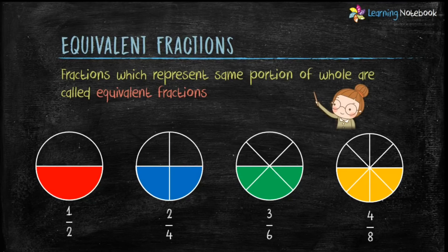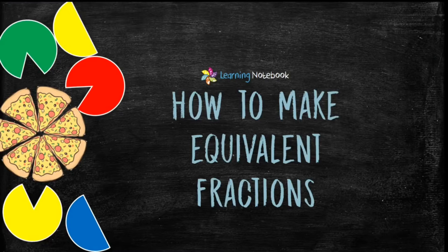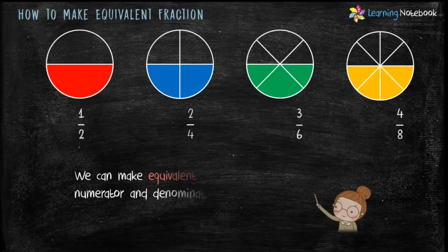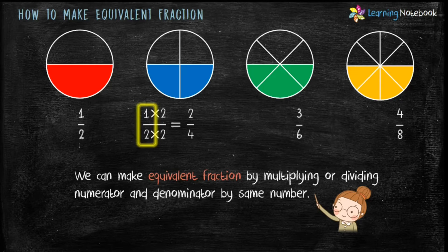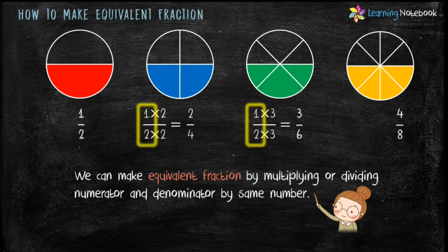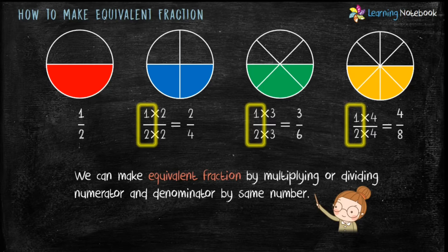Students, did you notice that each fraction in all these four figures represents the same portion? Such fractions are called equivalent fractions. By definition, fractions which represent the same portion of a whole are called equivalent fractions. We can make equivalent fractions by multiplying or dividing the numerator and denominator by the same number. Like in our example, if we multiply both numerator and denominator of 1 by 2 by 2, we get 2 by 4. Similarly, multiplying by 3 gives 3 by 6, and multiplying by 4 gives 4 by 8.